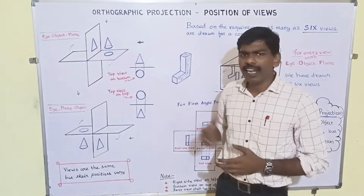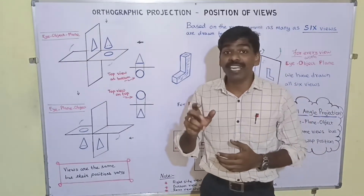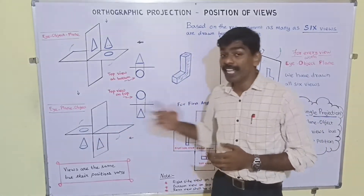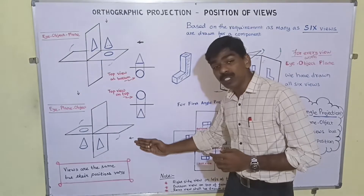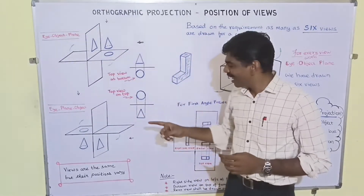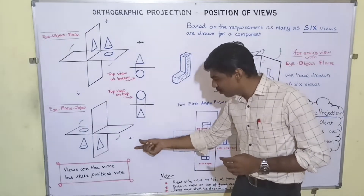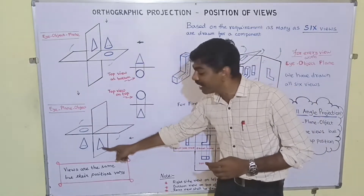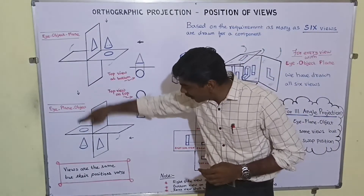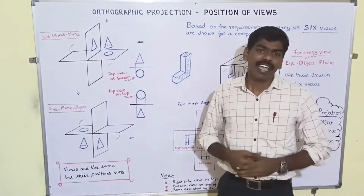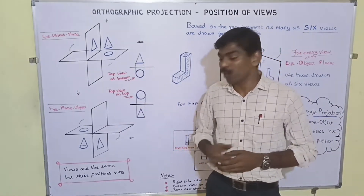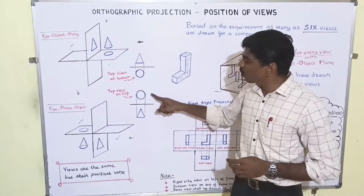When we have the object in the third quadrant, the observer is here to get the front view and here to get the top view. In this case the order is: eye, then comes the plane, then comes the object. Even in the top view, the eye of the observer comes first, then the plane, then the object. Again, rotating the horizontal plane 90 degrees clockwise, we get the front and top view.